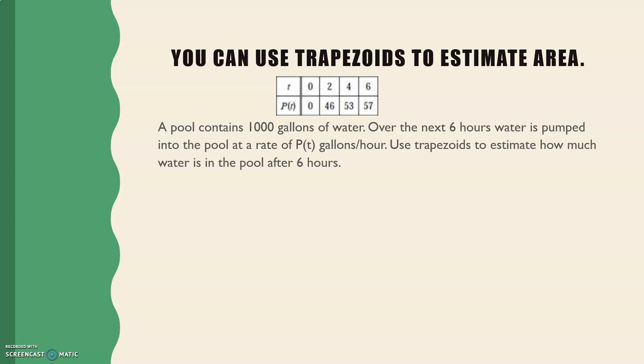And then the last one that we touched on was finding area using trapezoids. So a pool contains a thousand gallons of water. Over the next six hours, water is pumped into the pool at a rate of P of t gallons per hour. Use trapezoids to estimate how much water is in the pool after six hours. So this thousand gallons is our starting amount, and then we just add a whole bunch of water. So if we're going to use trapezoids, our first trapezoid would have a width of 2. And actually, I think it's helpful to sketch this one out too. So 0, 0, 2, 46, and we can be very rough. 4, 53, 6, 57. So our first trapezoid is actually going to be a triangle because the height of one of the bases is zero. The base length is zero.